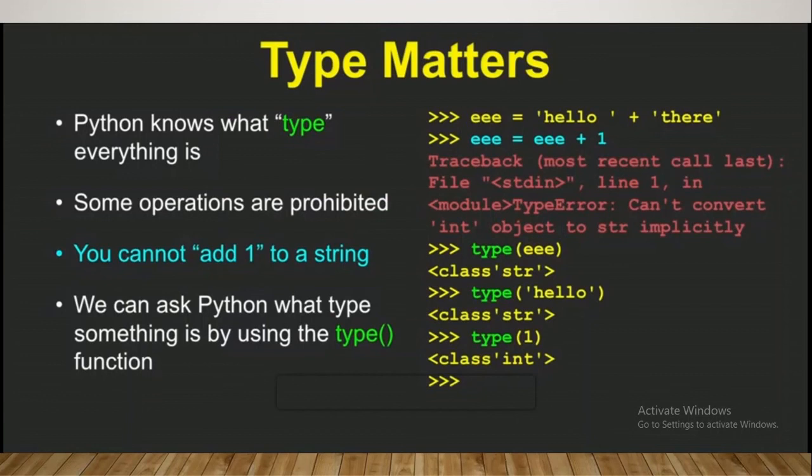If you want to know the type of ee, it's showing string. Type of 'hello' - it's a string. Type of 1 - it's an integer. That's where Python knows everything. Python knows the type of thing which you have given to it.